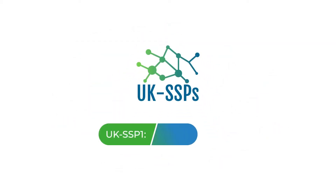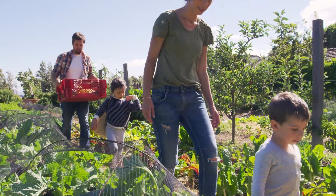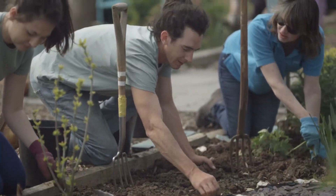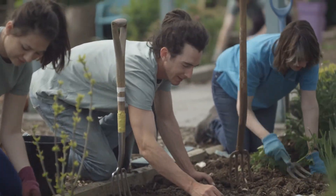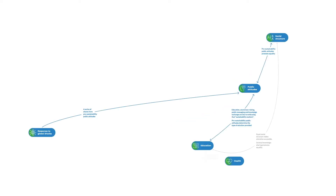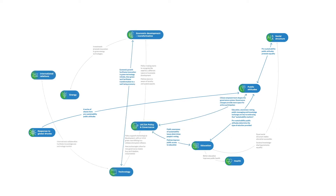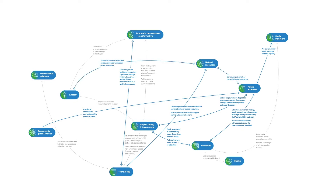UK SSP1, the sustainability scenario, describes a world where the UK is a sustainable, egalitarian and cooperative society transitioning to a fully functional circular economy. This leads to healthier lifestyles, improved wellbeing, sustainable use of natural resources and more stable and fair international relations. It represents a scenario with a low carbon economy and high capacity to adapt to climate change.